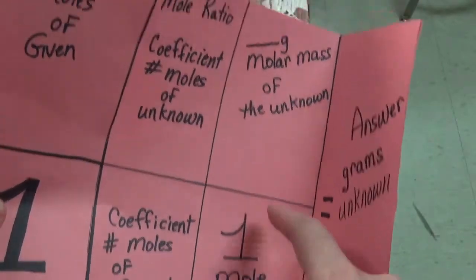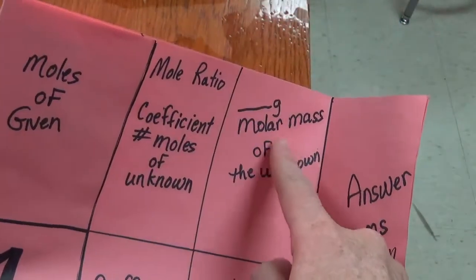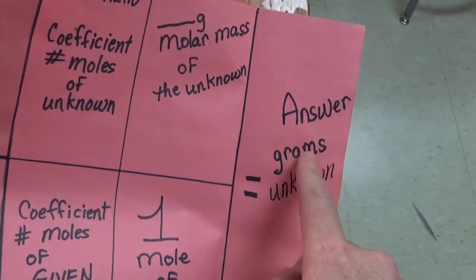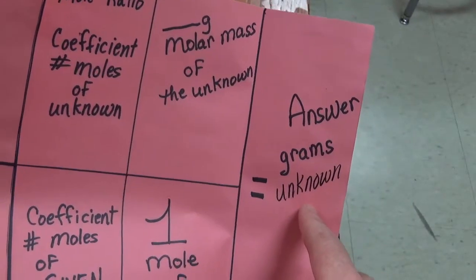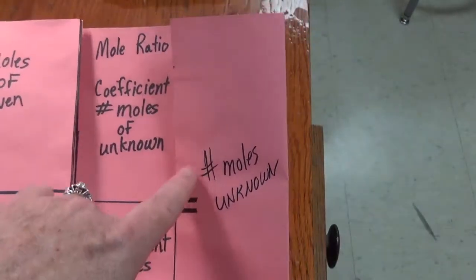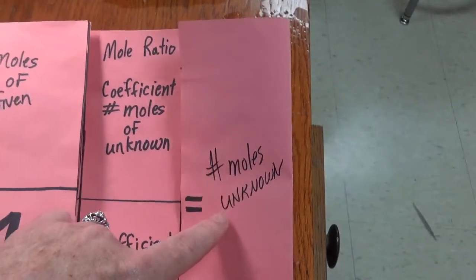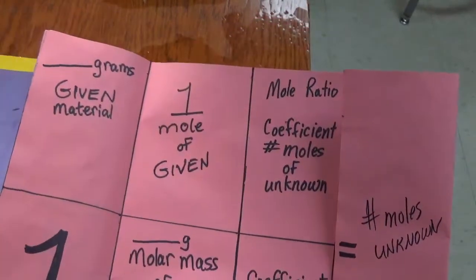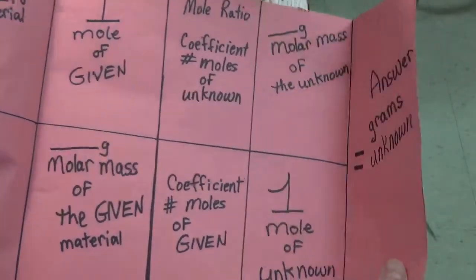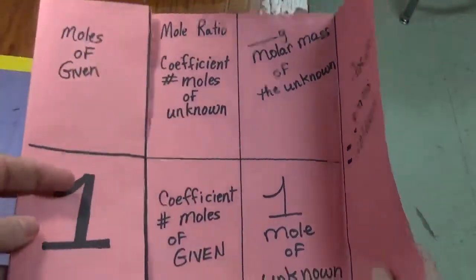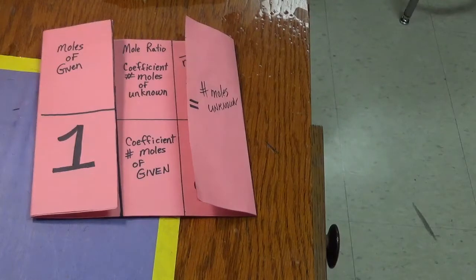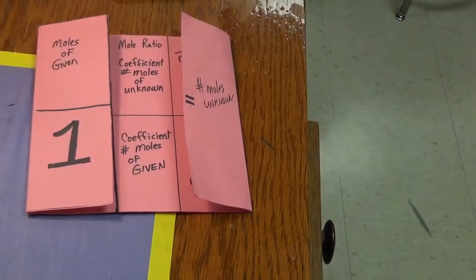1 mole of unknown is made of how many grams? It would be the molar mass of whatever the unknown formula shows. When it's open, you get the answer in grams of whatever the unknown is — just as when this was closed, we had the answer in number of moles of unknown. Replay this video as much as needed so that you can copy this and follow along as I use this to demonstrate how to calculate stoichiometry questions during classroom and tutorial videos. Thank you.